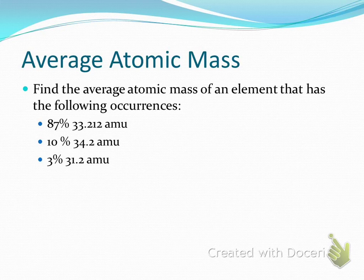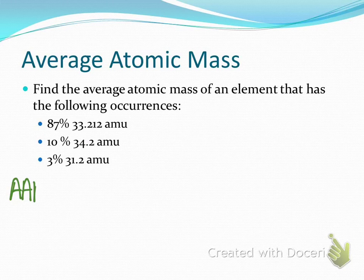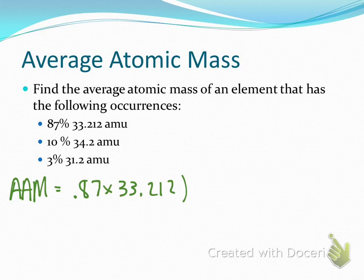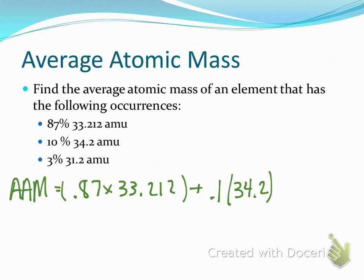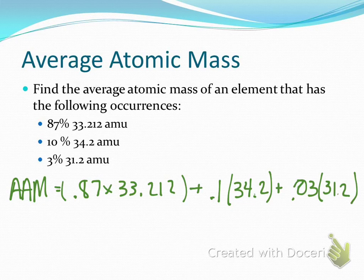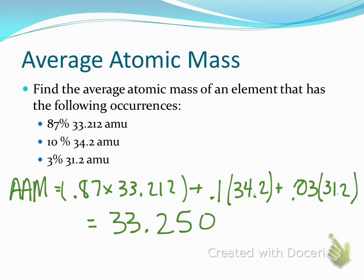I want you to try and calculate the average atomic mass of this particular element. If we plug it into our equation, our average atomic mass would be 0.87 times 33.212, plus 0.1 times 34.2, plus 0.03 times 31.2.